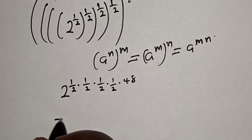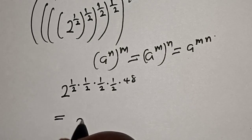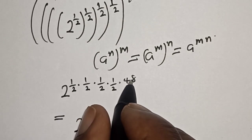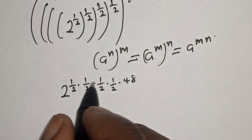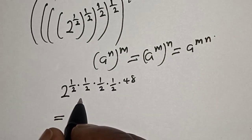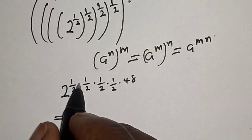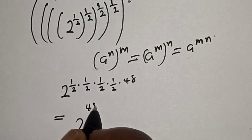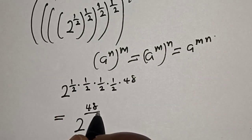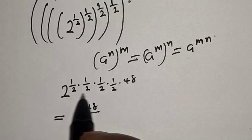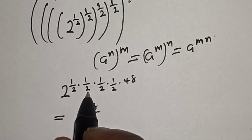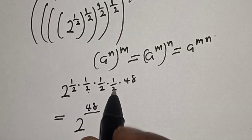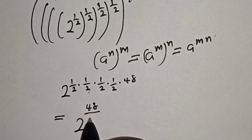This is equal to 2 raised to the power of 1 over 2. If you multiply 48 by 1 times 1 times 1 times 1, we have 48. Then over 2 times 2 is 4, times 2 is 8, times 2 is 16.